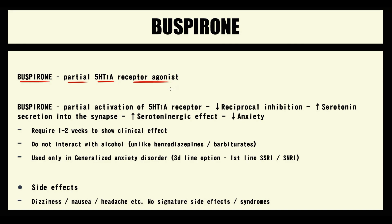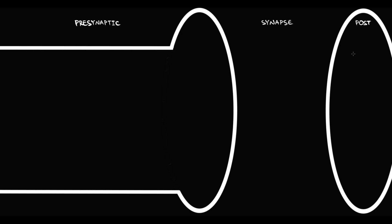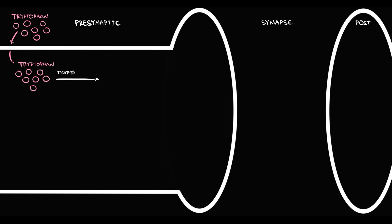Buspirone is a partial agonist of serotonin 1A receptor. To explain the mechanism of action of this drug, we have to know how serotonin neurons work. We have a presynaptic neuron, synapse, and postsynaptic neuron. Serotonin neurons uptake tryptophan; once tryptophan appears inside the neuron, it undergoes hydroxylation by the rate-limiting enzyme tryptophan hydroxylase, with formation of serotonin.